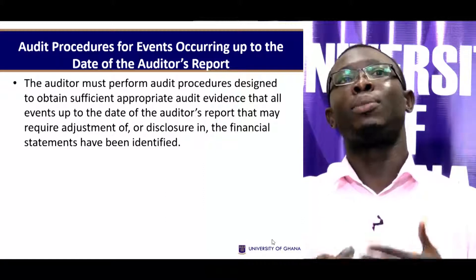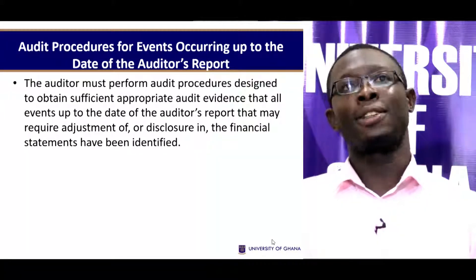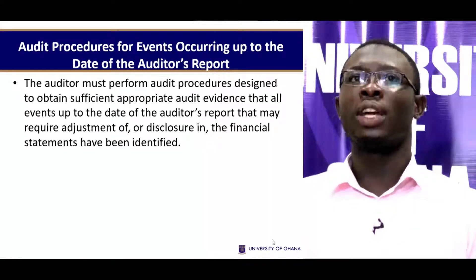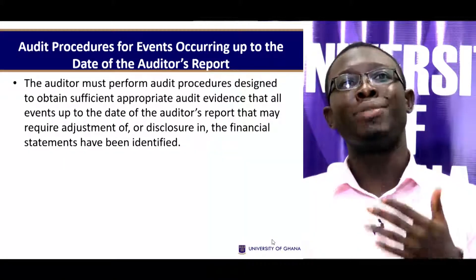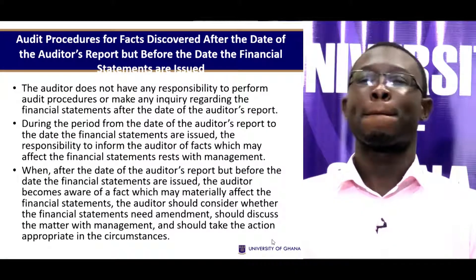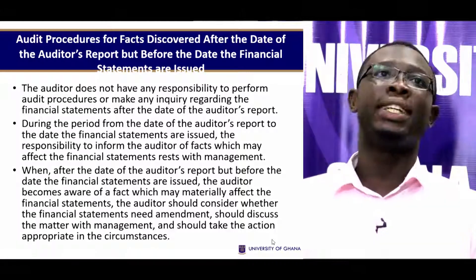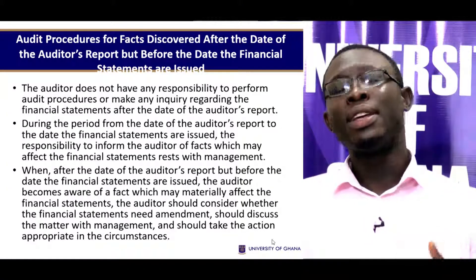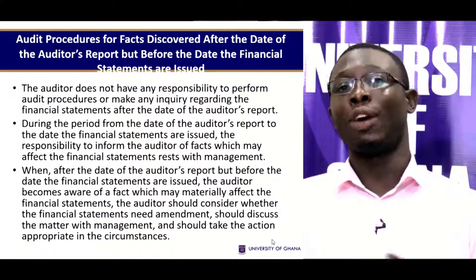Let's turn our attention to certain procedures and occurrences up to the date of the auditor's report. The auditor must perform audit procedures designed to obtain sufficient appropriate audit evidence that all events up to the date of the audit report that may require adjustment or disclosure in the financial statements have been identified. These include things that occurred after the auditor's report but before the financial statements have been issued.